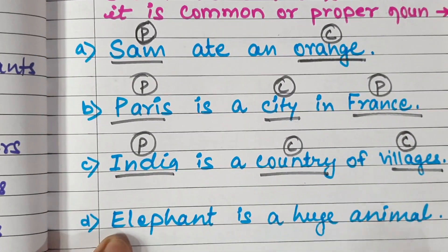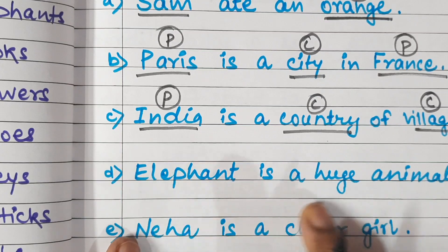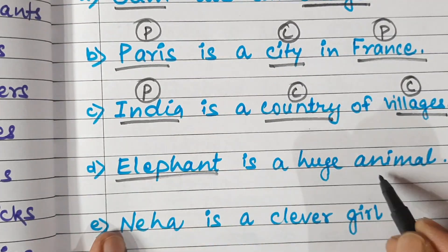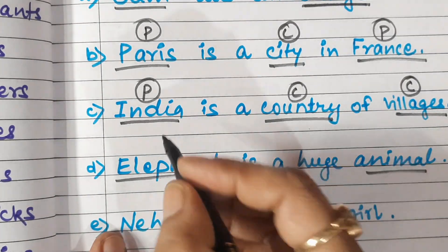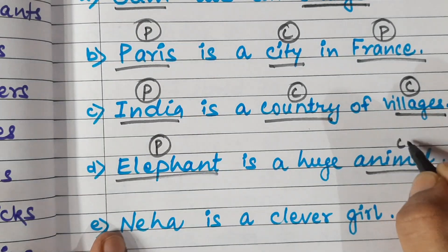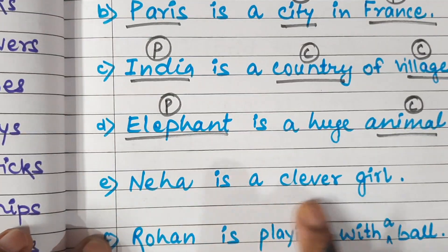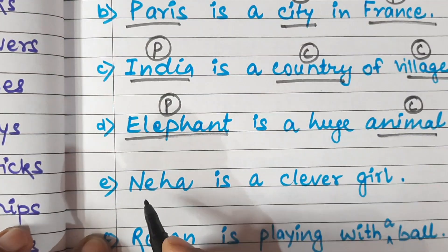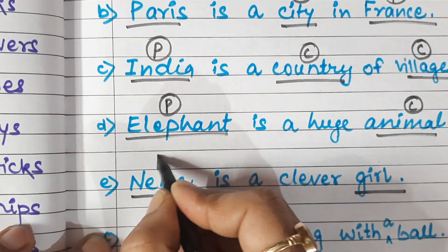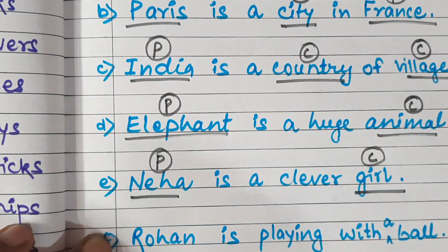Because these are villages in general — which specific village is not mentioned. Elephant is a huge animal: elephant and animal are both noun words. Elephant is a proper noun and animal is a common noun. Neha is a clever girl: Neha and girl are both noun words. Neha is a proper noun and girl is a common noun.